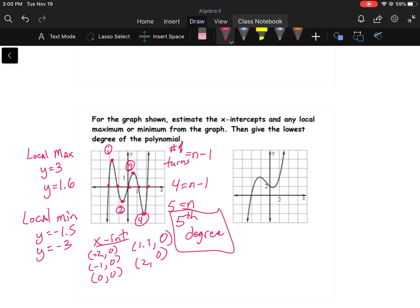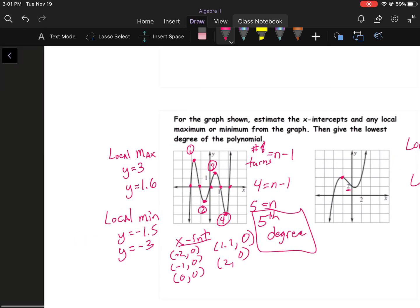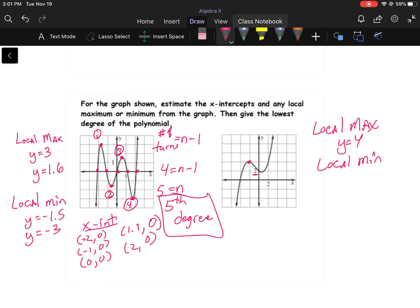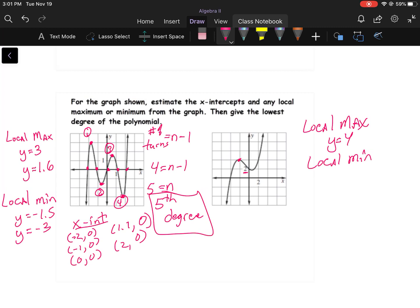But just because it's a fifth degree polynomial doesn't necessarily mean that all five roots are on that graph. For instance, over here, again I'm going to look at my local max, the top of the hill, the y-value. Again it's going by twos, so it's going to be y equals four. Local min, and that local min looks like it's maybe a little bit underneath two, so y equals 1.9. We've got one turn and two turns, so again number of turns two equals n minus one. This guy here is the third power.